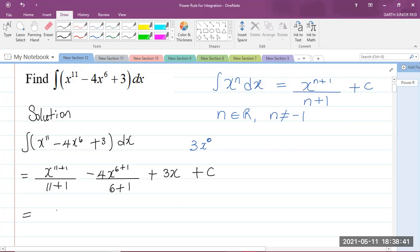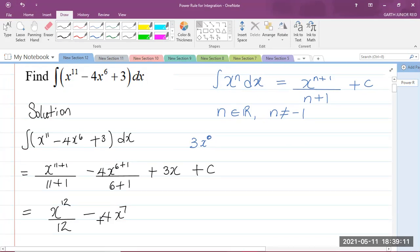So, this is now equal to, let us simplify. We have x to the power of 11 plus 1. We know that 11 plus 1 is 12, divided by 12, minus 4 times x to the power of 7, and we are also dividing by 7, plus 3x plus c, which is my arbitrary constant of integration. So, this is my answer.